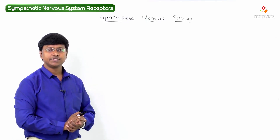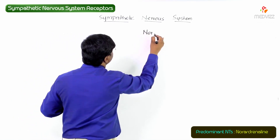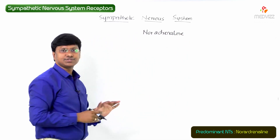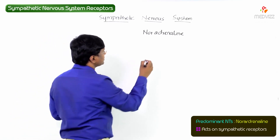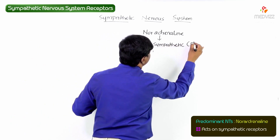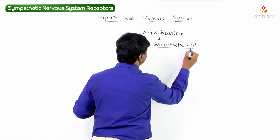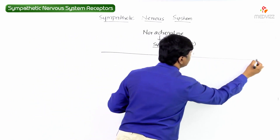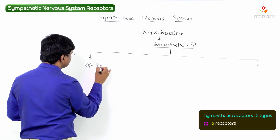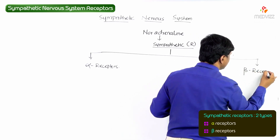The predominant neurotransmitter of the sympathetic nervous system is noradrenaline. This noradrenaline acts on the sympathetic receptors. The sympathetic receptors are of two types: noradrenaline acts on alpha receptors and it also acts on beta receptors.